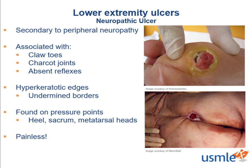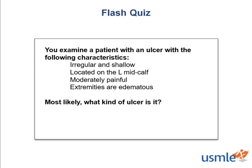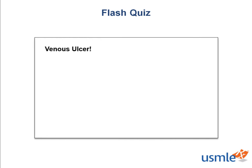Great job sticking with me through our three different ulcer types. Let's check in with a quick flash quiz. You see a patient in the clinic with an ulcer that's described as irregular, shallow, located on the left mid-calf, and is moderately painful. The patient has bilateral edema in their legs. What kind of ulcer is it? A venous ulcer. Remember, venous ulcers are the most common type. Chronic venous insufficiency and its related sequelae are very common, so naturally, venous ulcers are too.